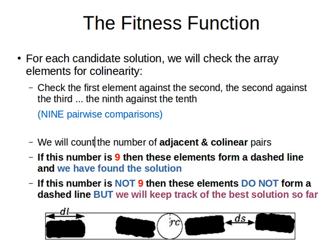Which means, because we do nine pairwise comparisons, if all is true, we will end up with number nine. So, if the number is nine, then indeed, the elements do form a dashed line, and we have found the solution. However, if this number is not nine, then the elements do not form a dashed line, but we will keep track of the best solution so far.